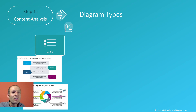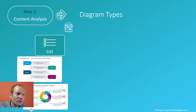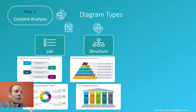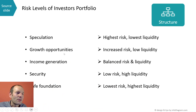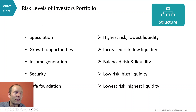Diagrams which express a list of items — just a plain list like this. Or diagrams which express structure. Or diagrams which express a process — flowchart diagrams. In our case, when we look at the content, we see this is not just a flat list — there's a certain hierarchy in it.